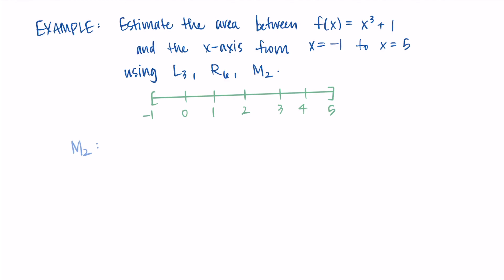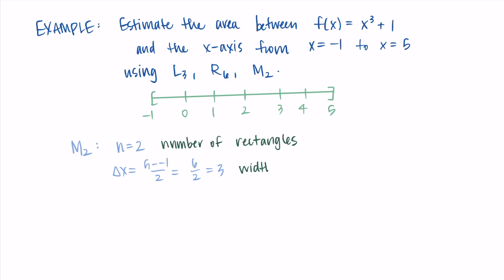To wrap up, I need to do the midpoint Riemann sum with two rectangles — M2. Here n = 2 and Δx = (5 - (-1))/2 = 6/2 = 3. This makes sense: two rectangles each with width 3 cover the interval. The endpoints are x₀ = -1, x₁ = 2, and x₂ = 5.